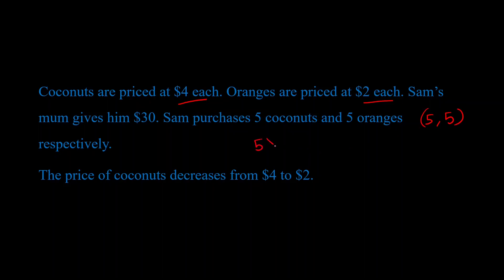So you have 5 coconuts priced at $4 each, that's 5 into 4 and 5 oranges priced at $2 each, that's 5 into 2. So the total is $30. Basically Sam is using every dollar that his mom has given him.